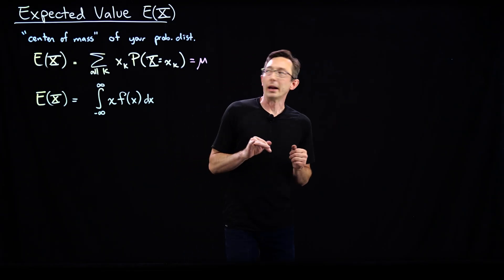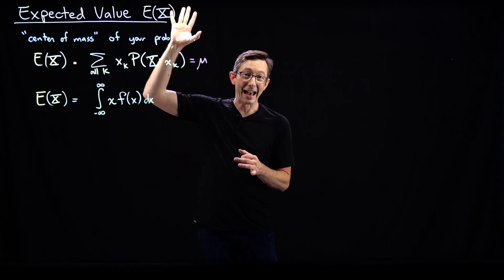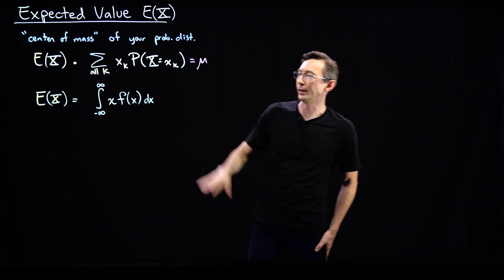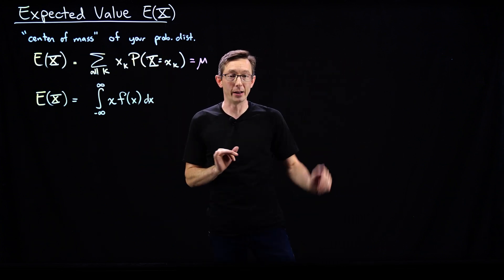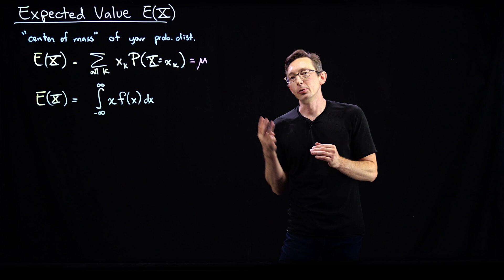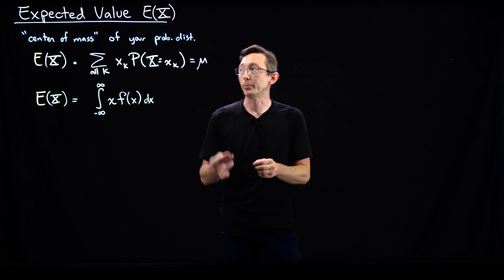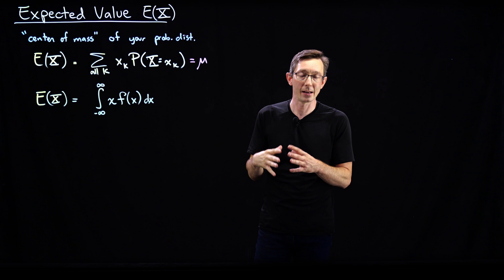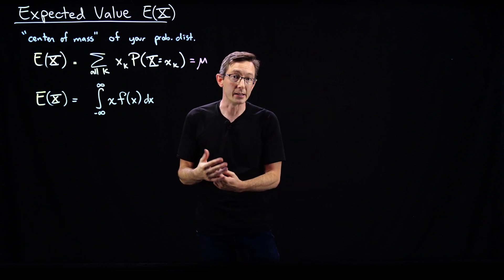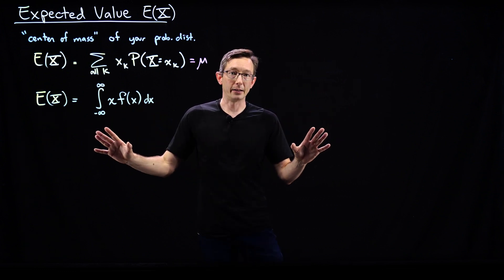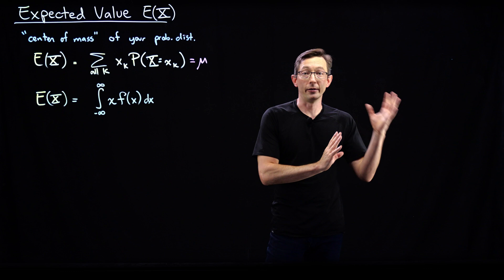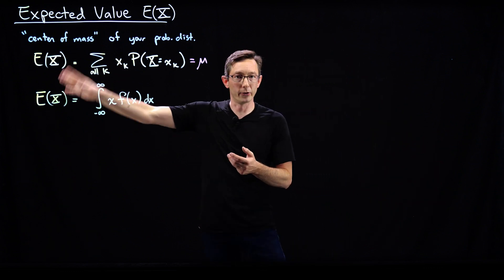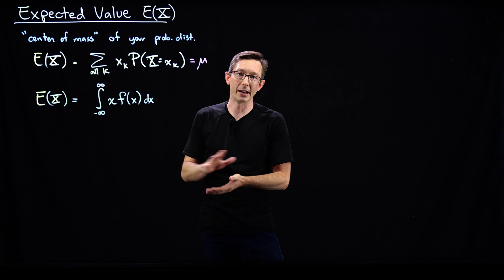Welcome back. So we introduced this notion of the expected value of a random variable x, or the expectation value, and gave some formulas and some intuition for what it meant. Now I'm going to tell you three of the most important properties of this expected value — this is a function of my random variable x. We're going to use these when we derive the variance and standard deviation, and all over the place in the next few lectures.